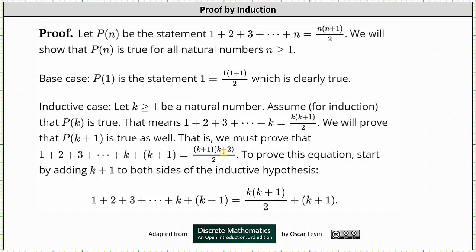To prove this equation, we start by adding k+1 to both sides of the equation given by P(k), which is the inductive hypothesis. So this gives us 1 + 2 + 3 + ... + k + (k+1) = k(k+1)/2 + (k+1).